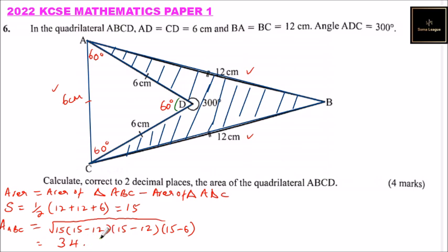Using your calculator you should be able to compute that — you multiply those values then press the square root sign to get the square root of the product. That gives you approximately 34.86 centimeters squared.